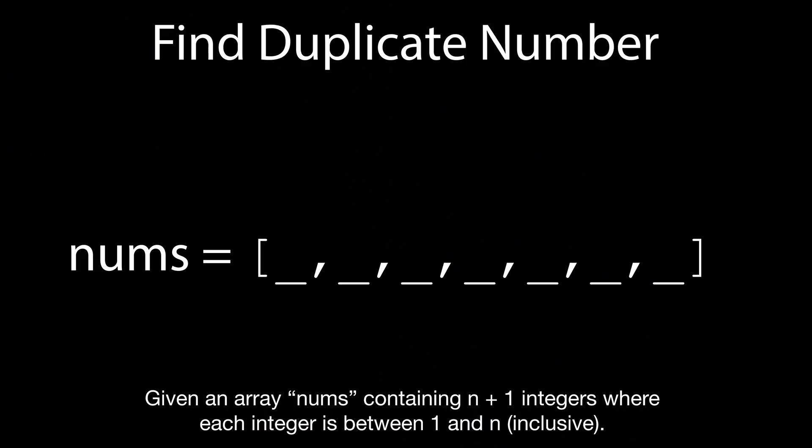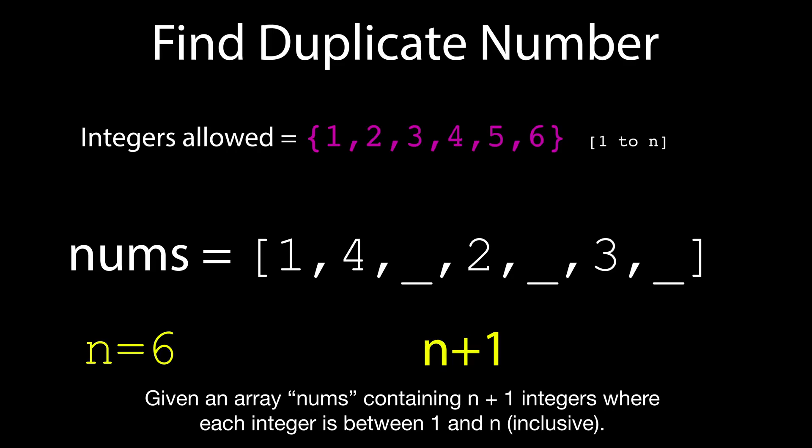What do we have here? Find duplicate number. Given an array nums containing n plus 1 integers, where each integer is between 1 and n inclusive. Prove that at least one duplicate number must exist.